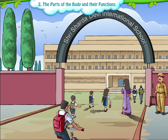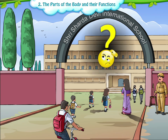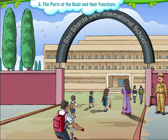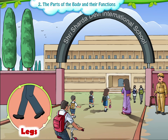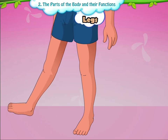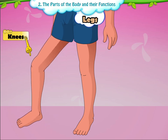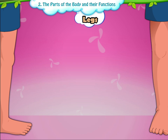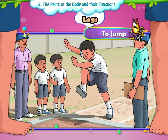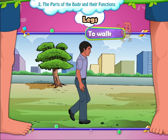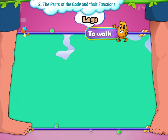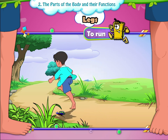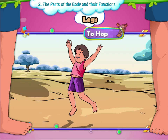Children, from the school gate, how do we come into our classrooms? Yes, it is with the help of our legs. Our legs bend at the knees and ankles. We can also bend the toes of the feet. We can jump, walk, run and hop with our legs.